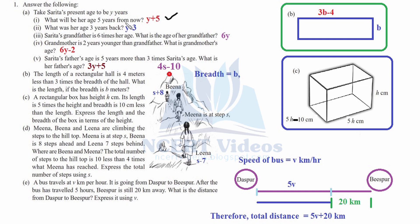Second: what was her age 3 years back? That means what was her age 3 years before the present age, so it is y minus 3. Third: Sarita's grandfather is 6 times her age. What is the age of her grandfather? 6 times means multiplied by 6 — so if she is y years old, her grandfather is 6y years old.